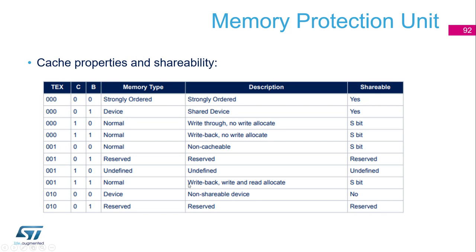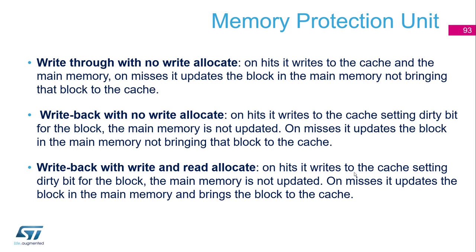There are three cache configurations available in normal mode: write-through with no write-allocate, write-back with no write-allocate, and write-back with write-and-read-allocate. For write-through with no write-allocate: on a write-hit, data is written to both cache and main memory; on a write-miss, it updates the block in main memory without bringing it to the cache.